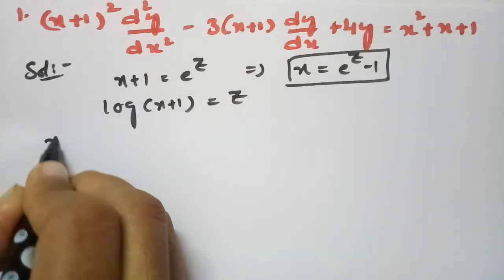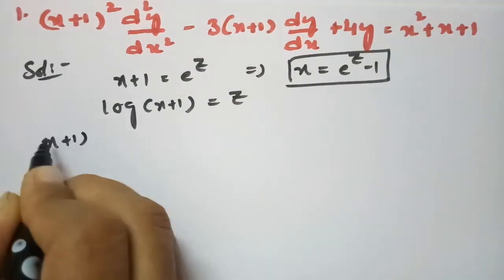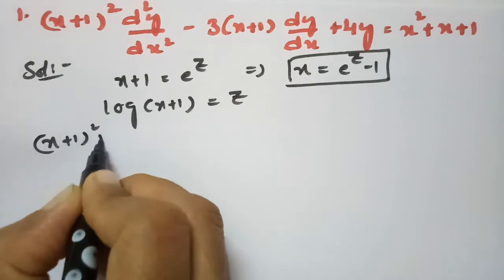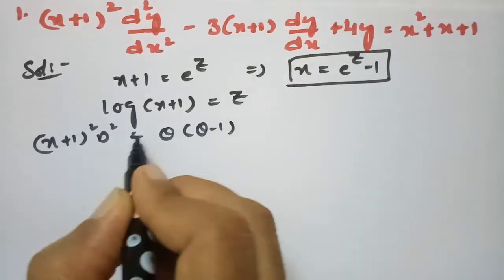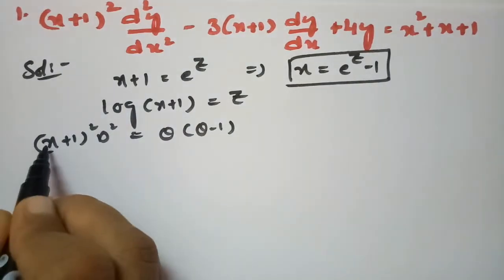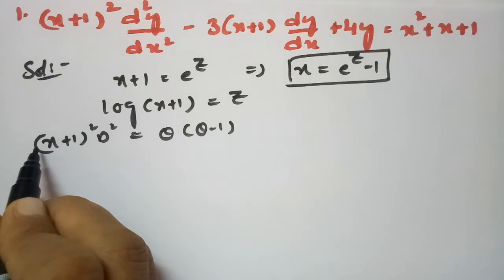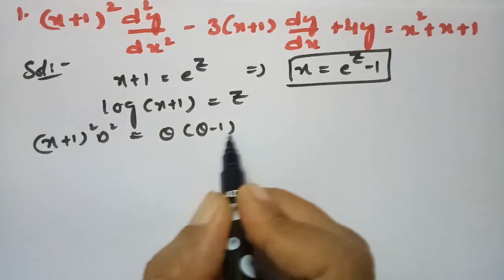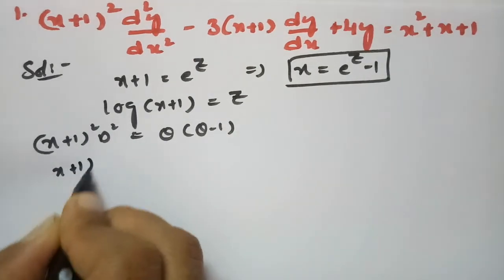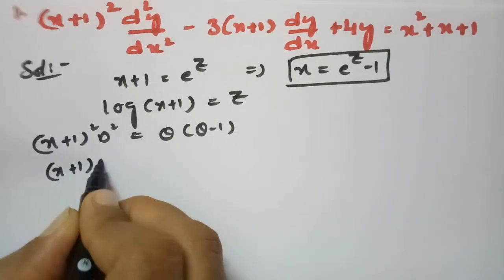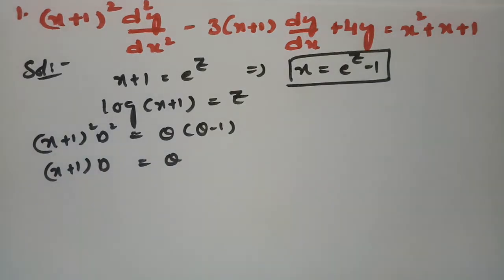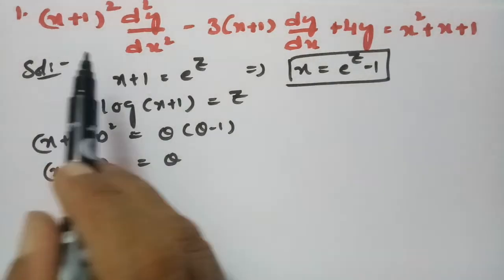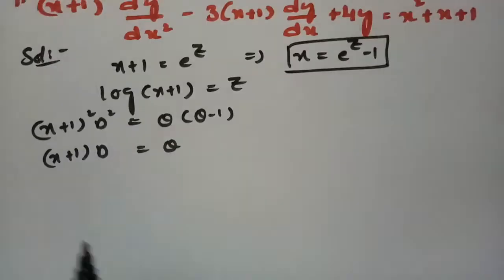Using operator notation, (x + 1)² · D² is nothing but θ(θ − 1), since b (the coefficient of x) equals 1. And (x + 1) · D is nothing but θ. Now I'll substitute all these into the above equation.